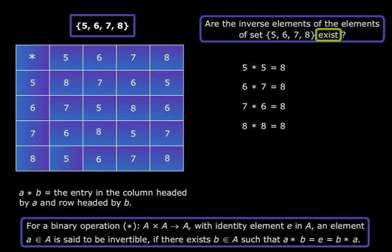So in this way, if we are given a binary operation table, we can easily find out the identity element and the inverses of the elements, provided that they exist.